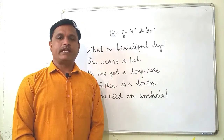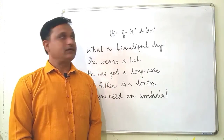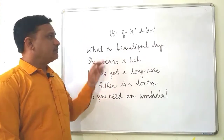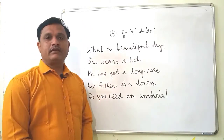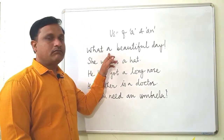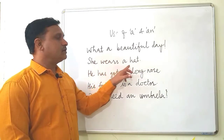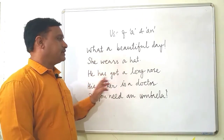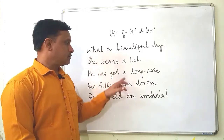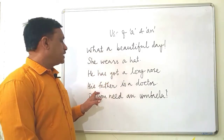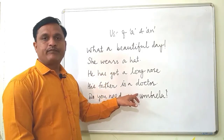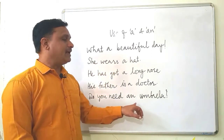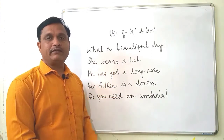Let's study how to make use of articles A and AN. Consider these examples: 'What a beautiful day!', 'She wears a hat.', 'She has got a long nose.', 'His father is a doctor.' And: 'Do you need an umbrella?' — here article AN has come.